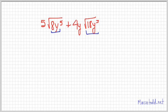Let's do one more with variables: 5√(8y⁵) plus 4y√(18y³). Obviously not like radicals, but let's break them down. 8 is 4 times 2, and y⁵ is y²squared times y. These are perfect squares, so on the outside I have 5 times 2 times y², which is 10y²√(2y).